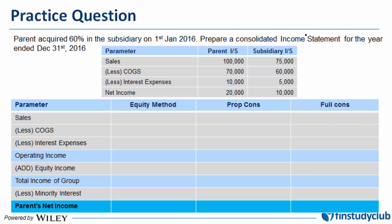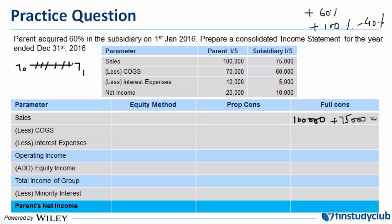The acquisition happened on 1st January 2016, at the beginning of the year. We need to prepare a consolidated income statement at year end, so at t0 the acquisition happened and at t1 is where the income statement is prepared. The rules for full consolidation are similar to balance sheet consolidation: whatever are the values of the parent, you include 100% of the subsidiary's values. Ideally I should include only 60%, but since I include 100%, I give credit for that extra 40% to minority interest.